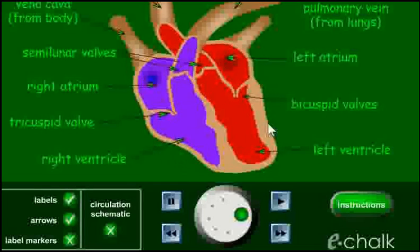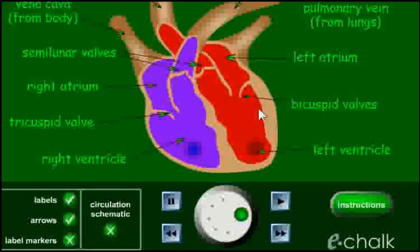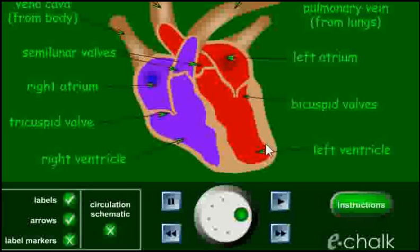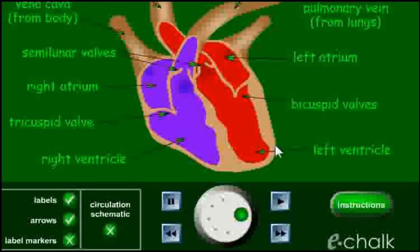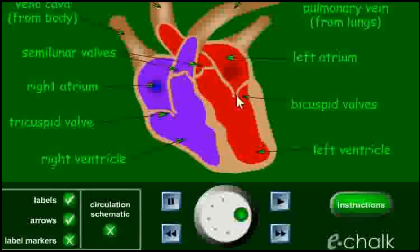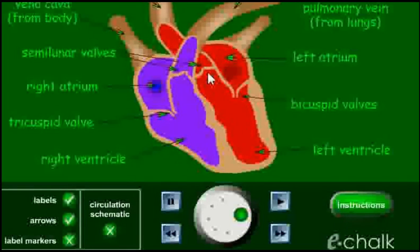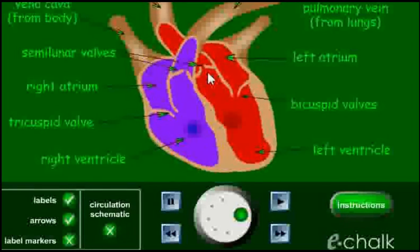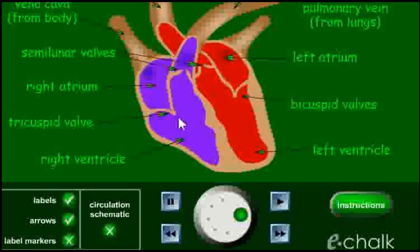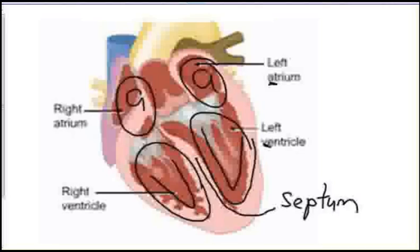Because the left side of the heart has to pump blood much further than the right side, it has a thicker muscle wall, which is why it feels like the heart is on the left-hand side of your chest. The four valves you can see in the heart make sure that the blood keeps going in the correct direction. And it's these valves shutting after a heart contraction that creates the dum-dum of a heartbeat.